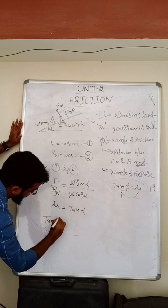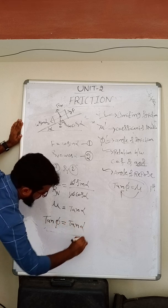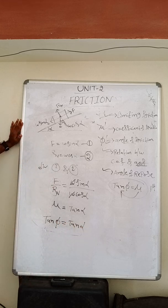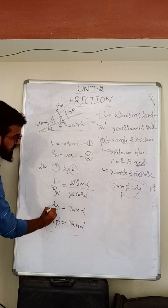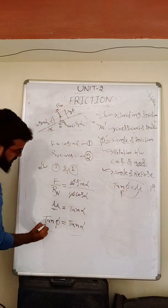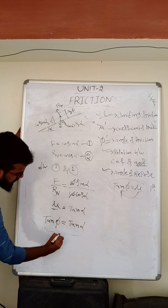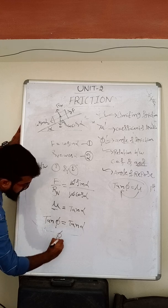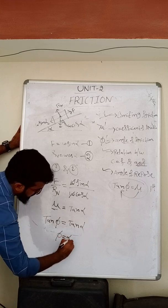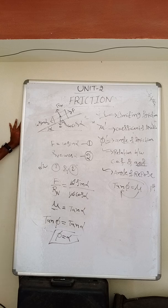Since tan φ = μ and μ = tan α, we get tan φ = tan α, which gives φ = α. This means the angle of friction equals the angle of repose.